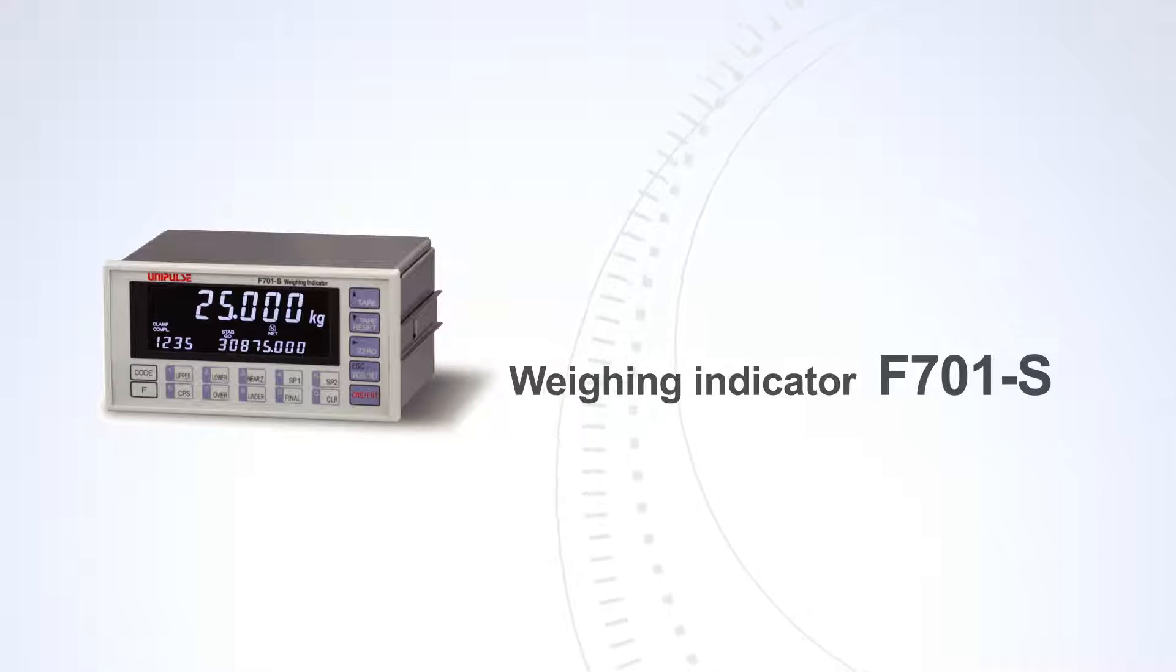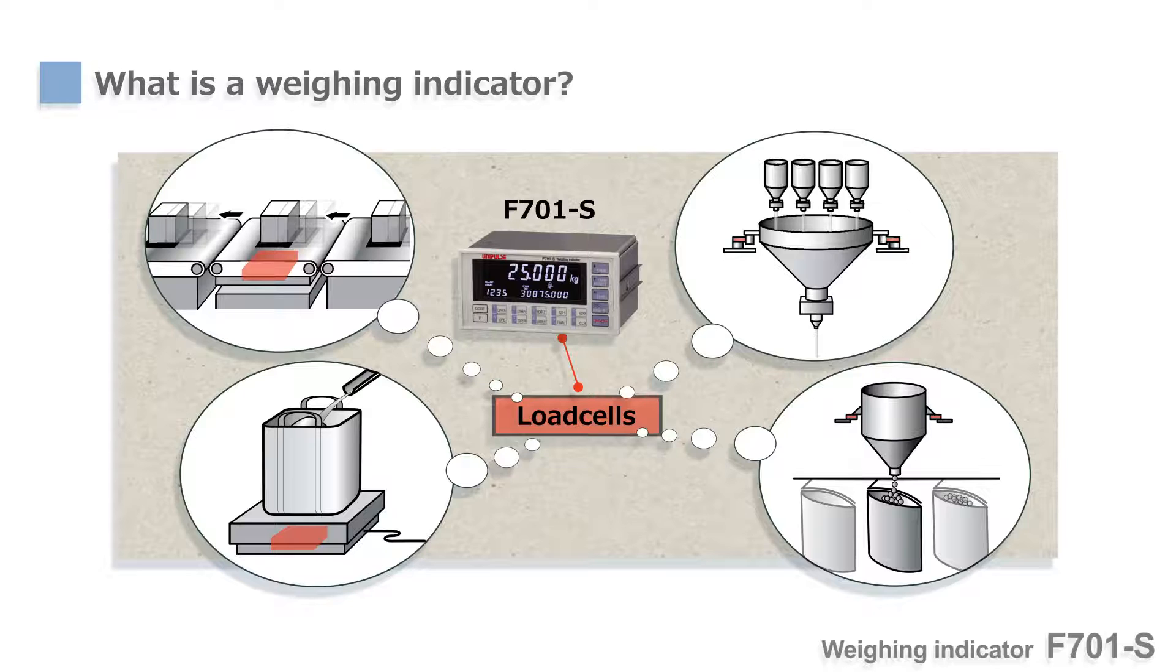We would like to introduce our high-performance weighing indicator F701S. Weighing indicators are used to control automated weighing systems. They process input signals from load cells and display the measured weight, then send out control signals used for automation of the weighing process.